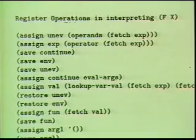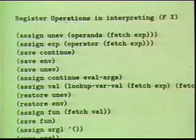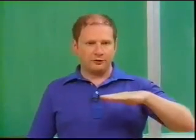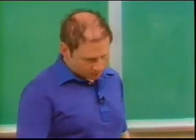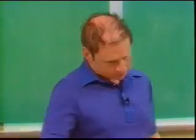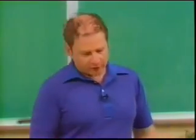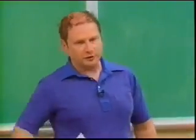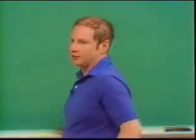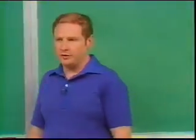In this compiler, we're not going to worry about apply-dispatch at all. We'll have both interpreted code and compiled code always apply procedures by going to apply-dispatch. That will easily allow interpreted code and compiled code to call each other. In principle, the compiler just runs like the evaluator, except it stashes away these operations instead of actually executing them.